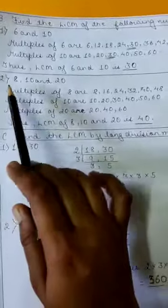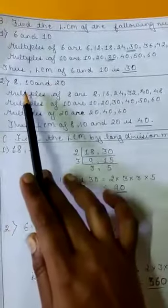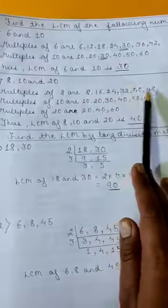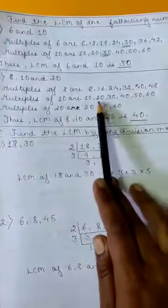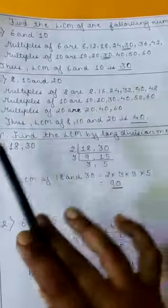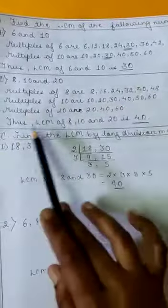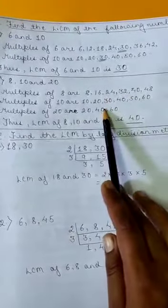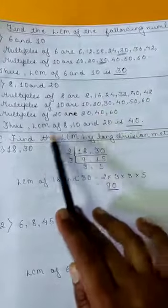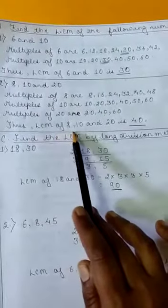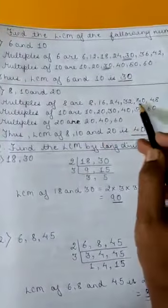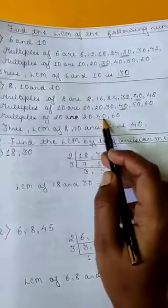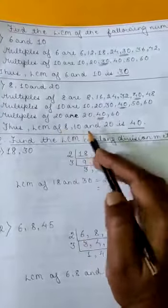Then you have to find the LCM of 8, 10, and 20. First find the multiples of 8: 8, 16, 24, 32, 40, 48. Then multiples of 10 are 10, 20, 30, 40, 50, 60. Multiples of 20 are 20, 40, 60. Now search for the Lowest Common Multiple which appears in all three. We get the Least Common Multiple of 8, 10, and 20 is 40. You can see 40 is in multiples of 8, in multiples of 10, and in multiples of 20. So it is the Least Common Multiple.